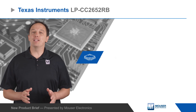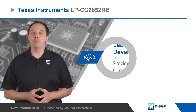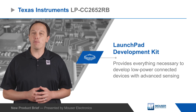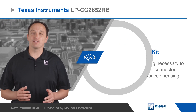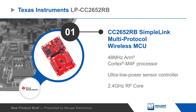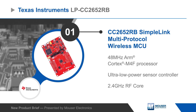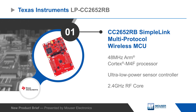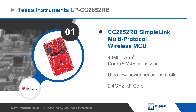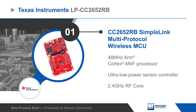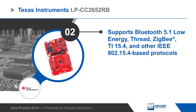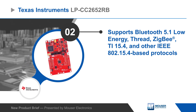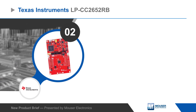The Texas Instruments LP-CC2652RB LaunchPad Development Kit provides everything necessary to start developing low-power connected devices with advanced sensing. The kit is based on the CC2652RB SimpleLink Multi-Protocol Wireless MCU, which features a 48 MHz ARM Cortex-M4F processor, an ultra-low-power sensor controller, and a 2.4 GHz RF core supporting Bluetooth 5.1 Low Energy, ZigBee, TI 15.4, and other protocols.